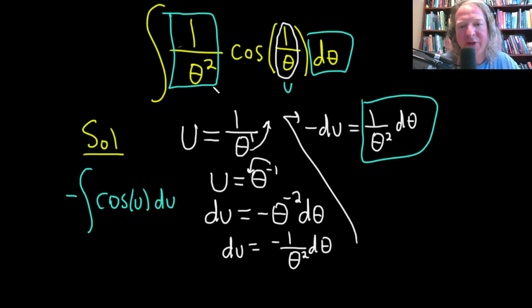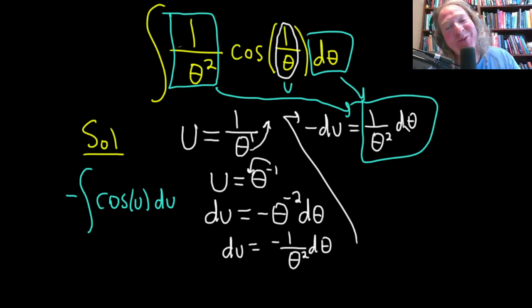So again, the stuff you see here in the blue boxes is this. See it? So it's 1 over theta squared d theta.